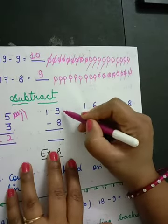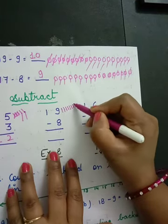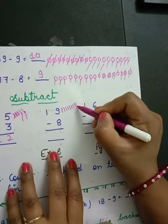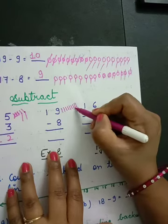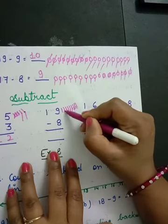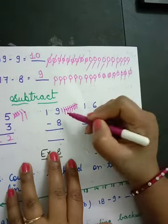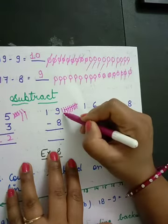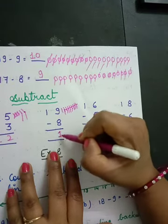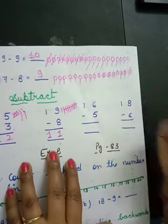Next: draw 1, 2, 3, 4, 5, 6, 7, 8, 9 lines and cut 8: 1, 2, 3, 4, 5, 6, 7, 8. How many lines remain? Only one. And one's answer is one. Got it all of you?